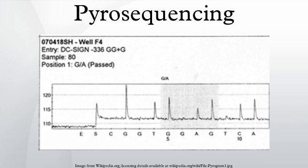Pyrosequencing is a method of DNA sequencing based on the sequencing by synthesis principle. It differs from Sanger sequencing in that it relies on the detection of pyrophosphate release on nucleotide incorporation, rather than chain termination with dideoxynucleotides. The technique was developed by Mostafa Ronaghi and Pål Nyrén at the Royal Institute of Technology in Stockholm in 1996.